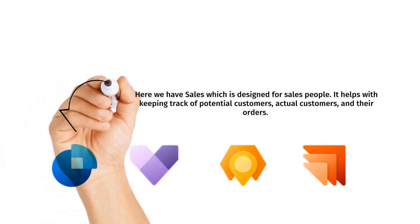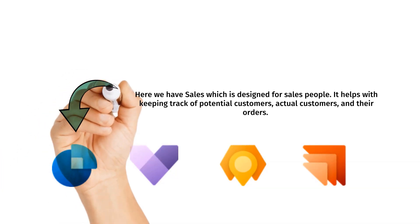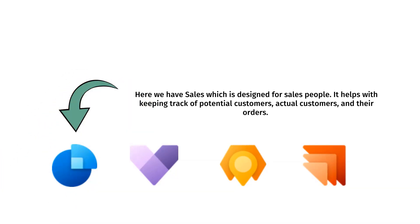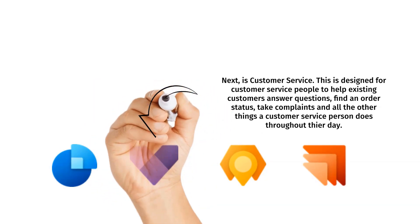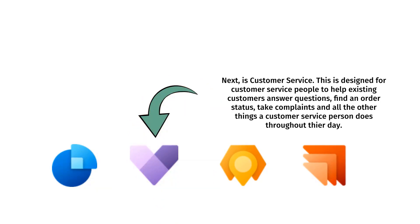Here we have Sales, which is designed for the salespeople — it helps with keeping track of potential customers, actual customers, and their orders. Next is Customer Service, designed for the customer service people to help existing customers: answering questions, finding order status, taking complaints, and all the other things a customer service person does throughout their day.